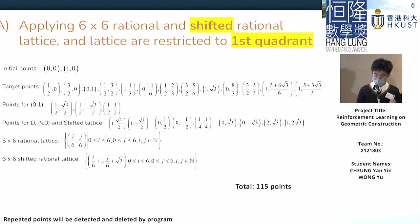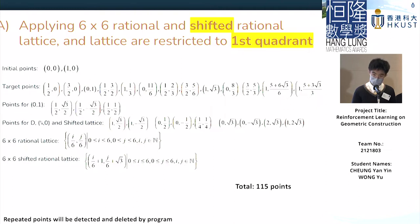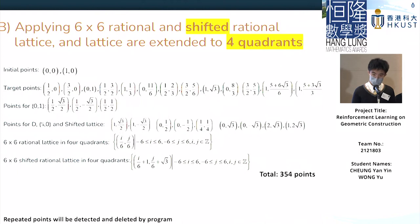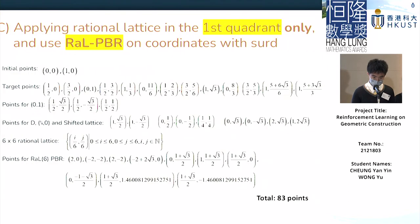For the Christmas tree task, we proposed three sets. Set A uses the shifted rational lattice on the first quadrant, providing around 115 points. For set B, we also use the shifted lattice but apply it on all four quadrants, since all four quadrants improve the constructability of points, resulting in a set of around 350 points. Set C applies it back to just one quadrant but also uses rational perpendicular bisector reconstruction to find certain points on the tree, making this set 83 points.